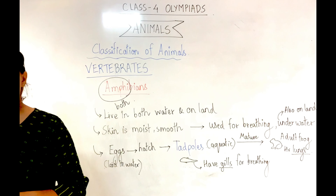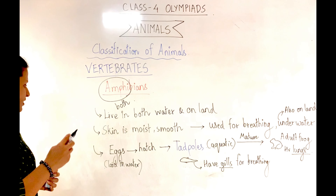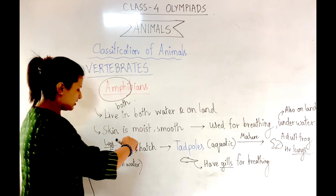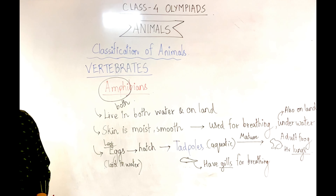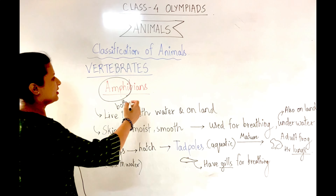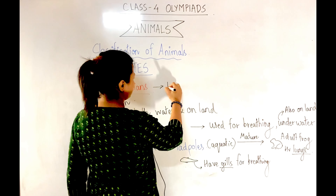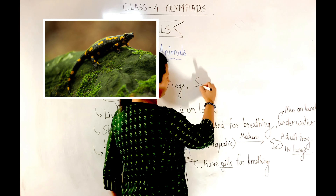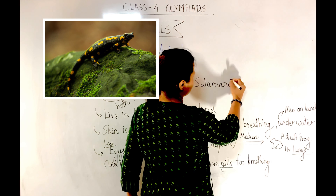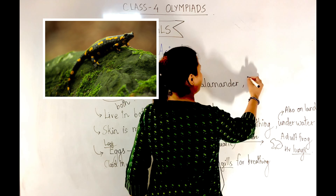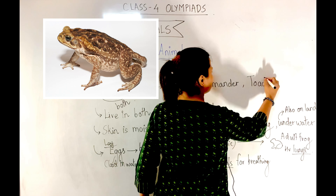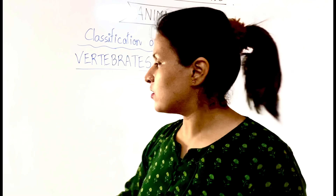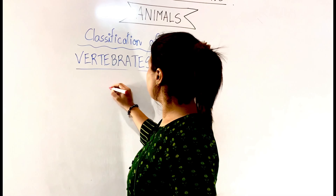Do amphibians lay eggs or give birth to young ones? They lay eggs. Examples of amphibians include frogs, salamanders, toads, and others. Next, let us learn about reptiles.